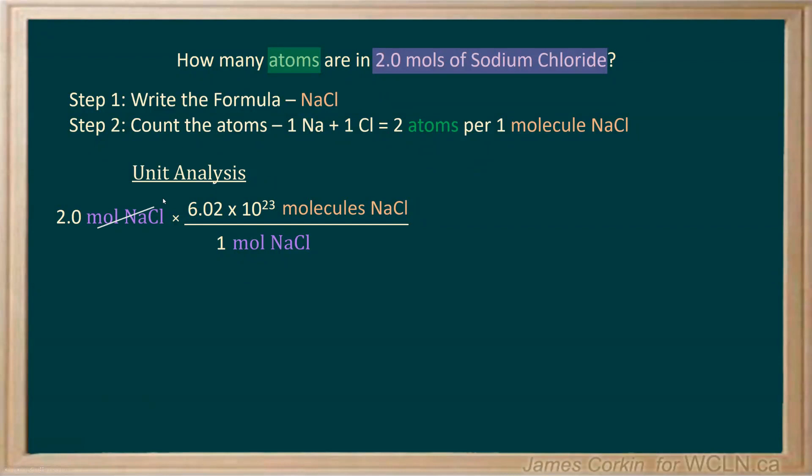Once we have molecules, now we can use the work from steps 1 and 2 to get to atoms. Make sure to indicate that your units cancel correctly. From here, we're going to have molecules on the bottom so that it cancels, atoms on top. And from above, we know there are 2 atoms for every 1 molecule.